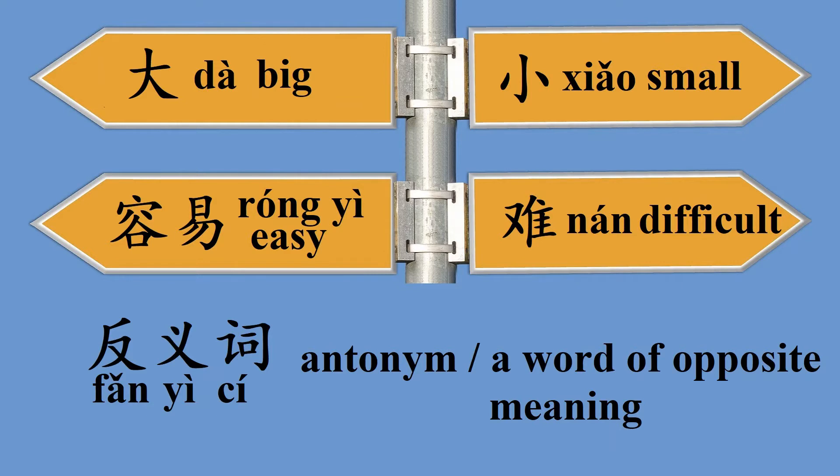反意词 means words with opposite meanings, or antonym in English. 反 is opposite, 意 is meaning, and 词 is words.